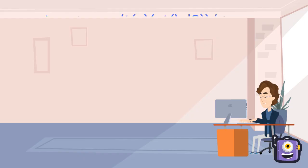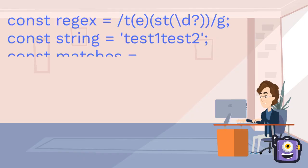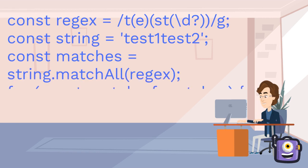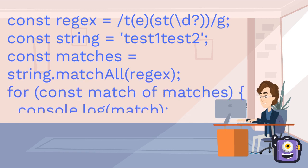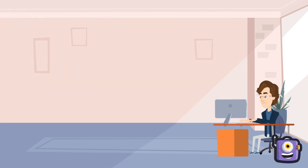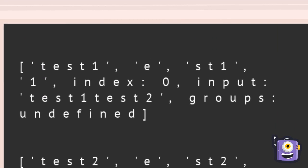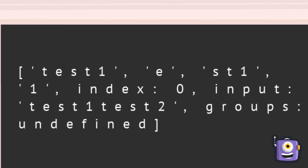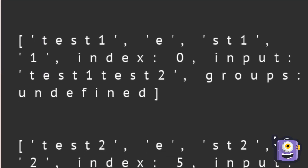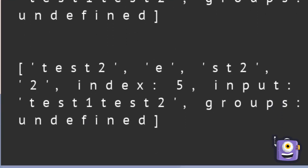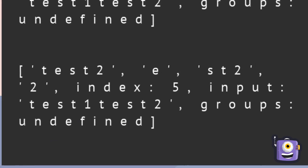Now let's see an example of matchAll using the same regex and string. In matches, we store the result of string.matchAll(regex), and then using a for-of loop we iterate over the results. In the console, we get two arrays containing the first full match test1 and its capturing groups, and the second full match test2 and its capturing groups.